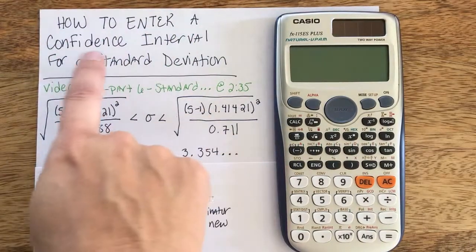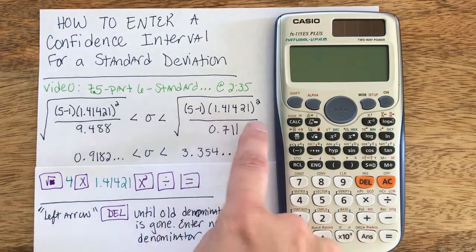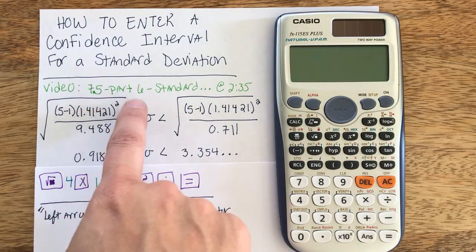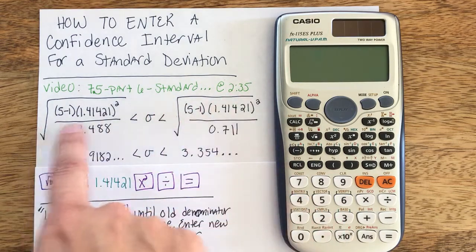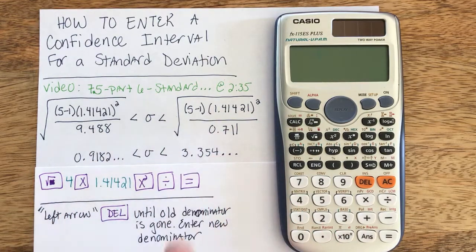And now I'm going to show you how to enter a confidence interval for a standard deviation. The problem I'm about to solve I took from my video titled 7.5 Part 6 Standard Deviation Etc at timestamp 2 minutes and 35 seconds. I solve the following problem where the solution I get is shown below.